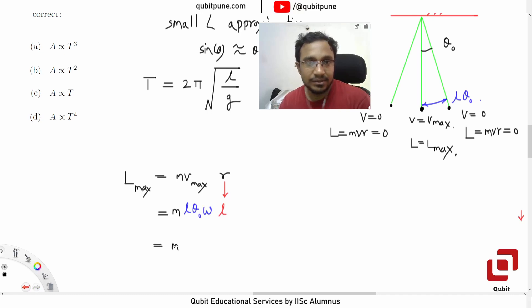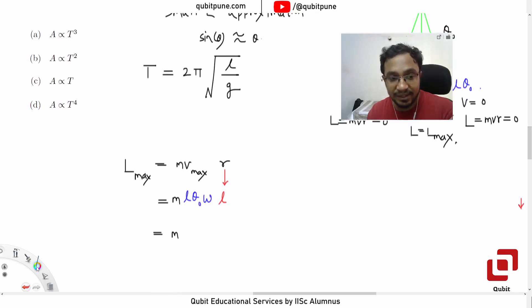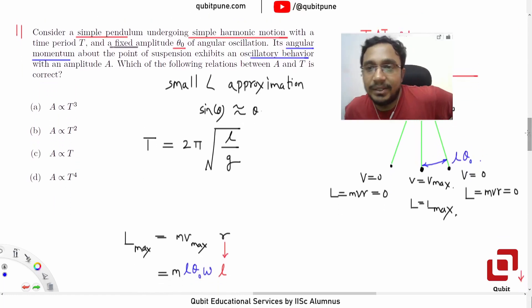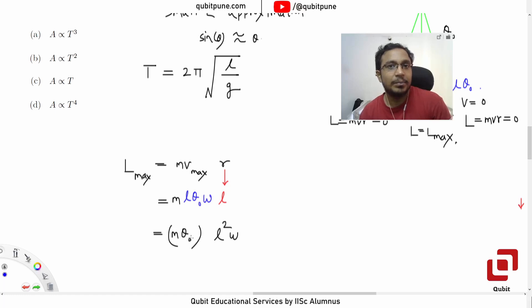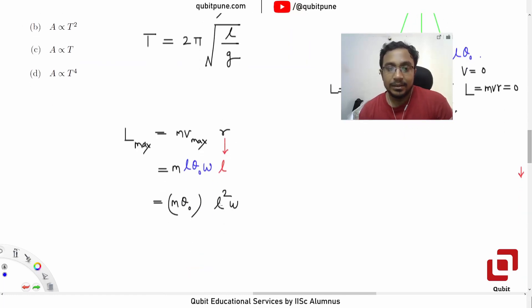Mass of the bob is fixed, cannot change it. Can we change theta naught? We cannot change theta naught because it is mentioned in the problem, fixed amplitude. I mean, what quantities are fixed here? We will change the variable quantities. So L squared. The length of the string is variable? It is not variable, but it depends on the time period, I would say. Right. What I meant to say is mass and theta naught, they don't depend on time period. Agreed? Yes sir.